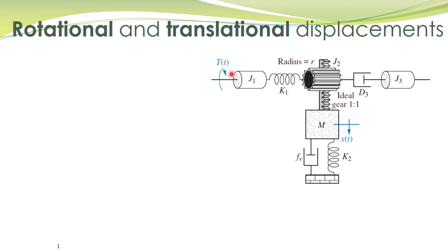this shaft rotates by a certain angle — let's call this angle theta1(t). Since this inertial element is considered to be a rigid element, this end of the inertial element also has the same angular displacement theta1(t). Here we have a rotational spring, and both ends of a spring can have different displacements. So if this end has displacement theta1(t), this end will have a different displacement — let's call it theta2(t). Furthermore, this pulley is a rigid pulley, so the other end of this pulley will also have the same displacement theta2(t).